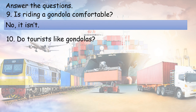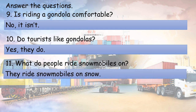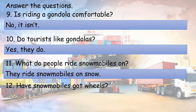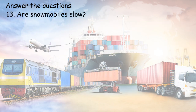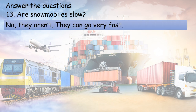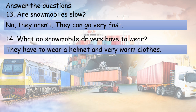10. Do tourists like gondolas? Yes, they do. 11. What do people ride snowmobiles on? They ride snowmobiles on snow. 12. Have snowmobiles got wheels? No, they haven't. They have got skis. 13. Are snowmobiles slow? No, they aren't. They can go very fast. 14. What do snowmobile drivers have to wear? They have to wear a helmet and very warm clothes.